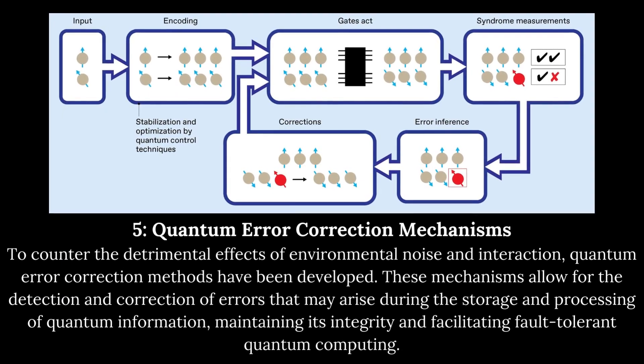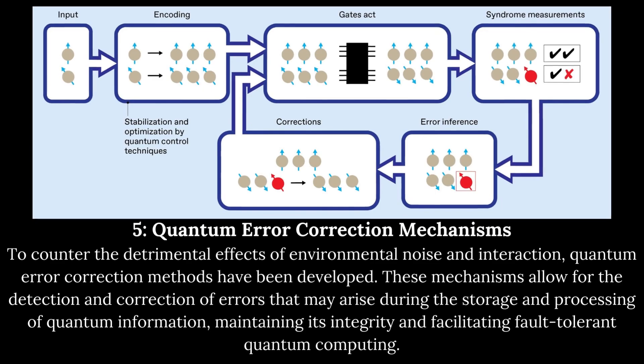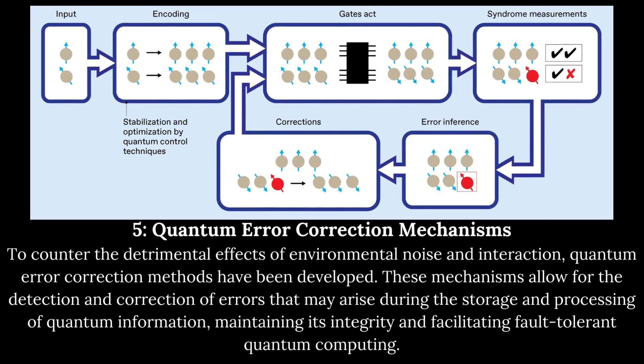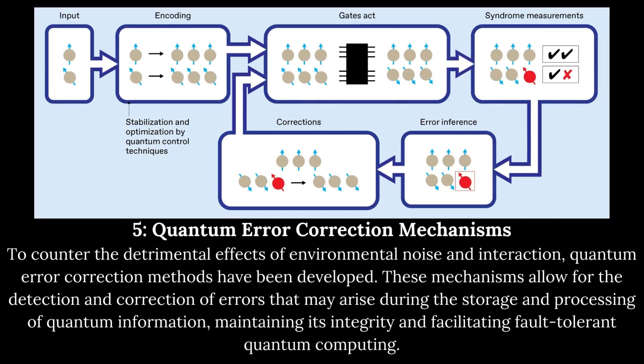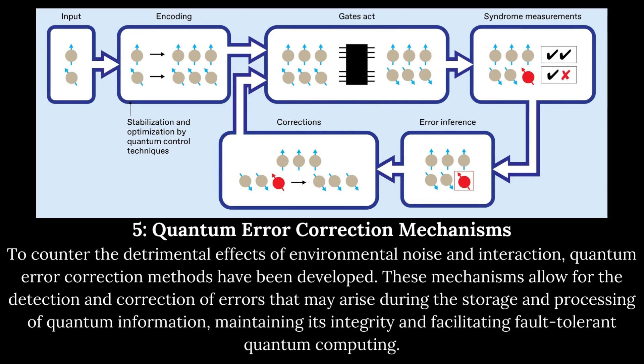Quantum Error Correction Mechanisms. To counter the detrimental effects of environmental noise and interaction, quantum error correction methods have been developed. These mechanisms allow for the detection and correction of errors that may arise during the storage and processing of quantum information, maintaining its integrity and facilitating fault-tolerant quantum computing.